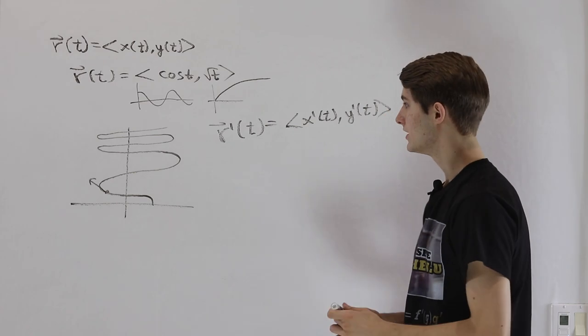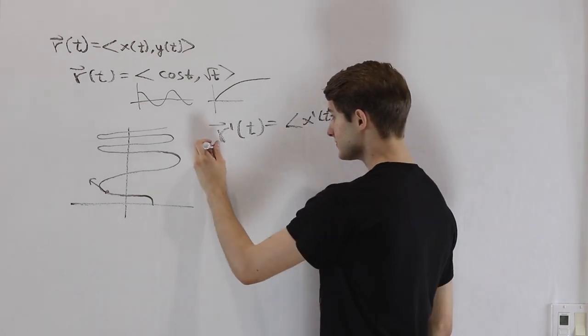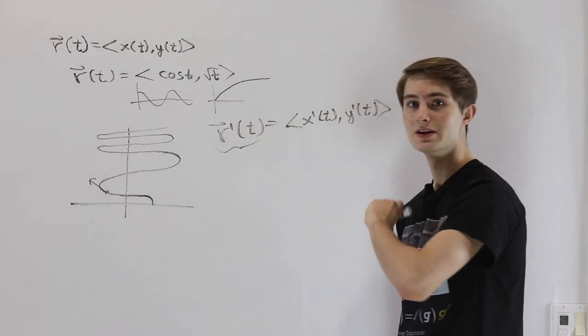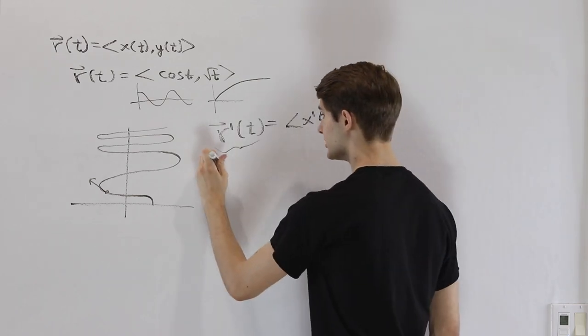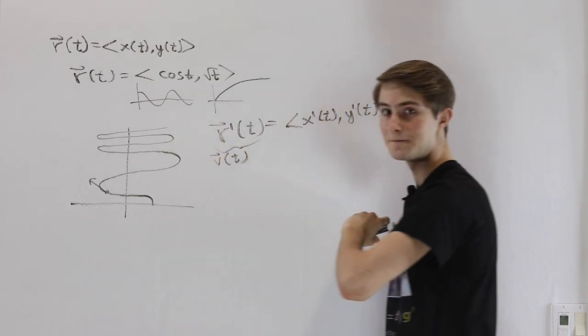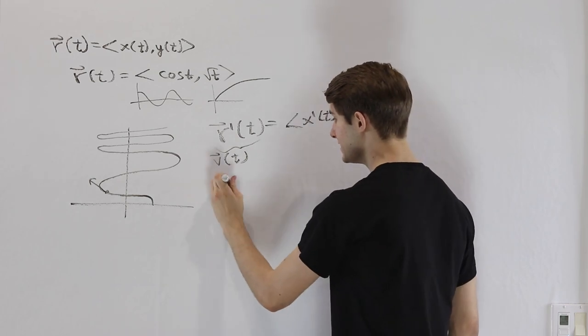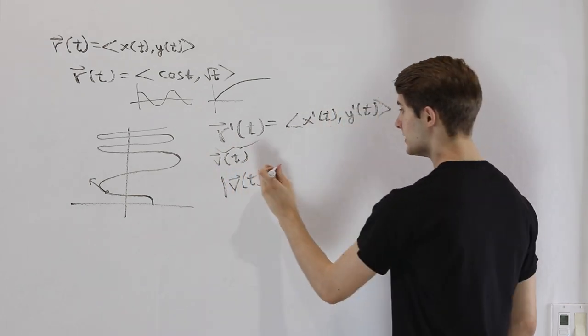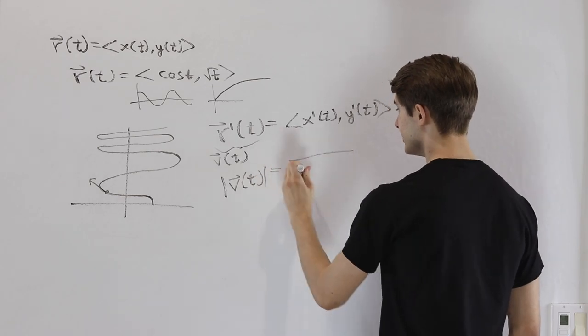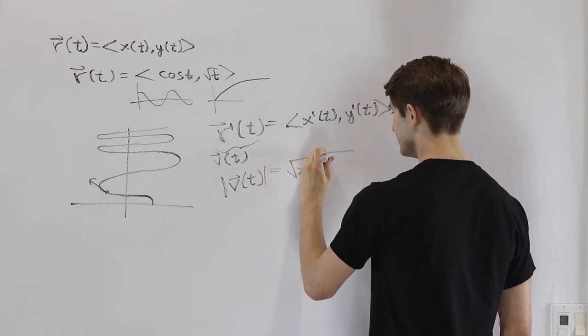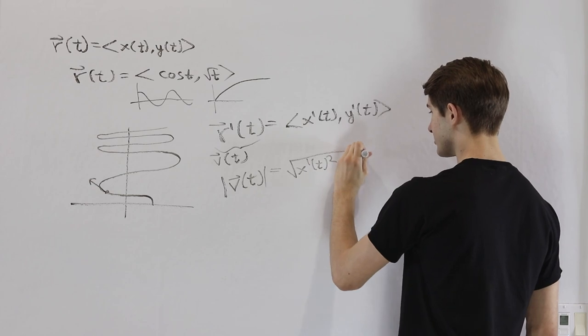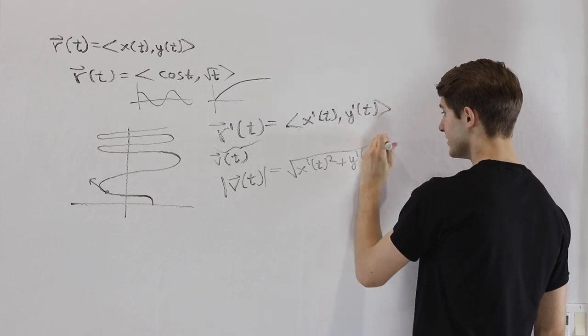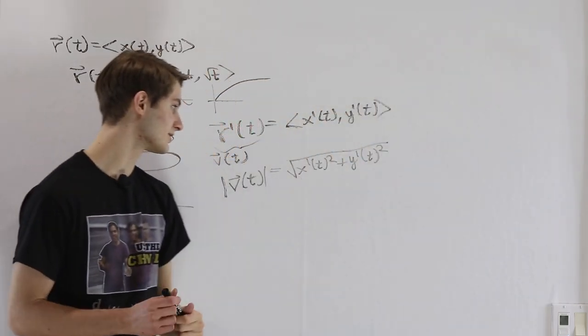And we're going to look at one more thing, which is, because this derivative has a direction, we could sort of think about it as the velocity vector, or v. If we wanted the magnitude of velocity, that's what we define as speed. And in this case, it's going to be the square root of x'(t)² plus y'(t)². That's just the magnitude of a two-dimensional vector.